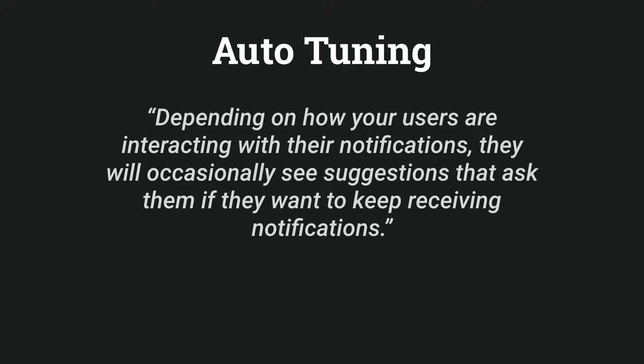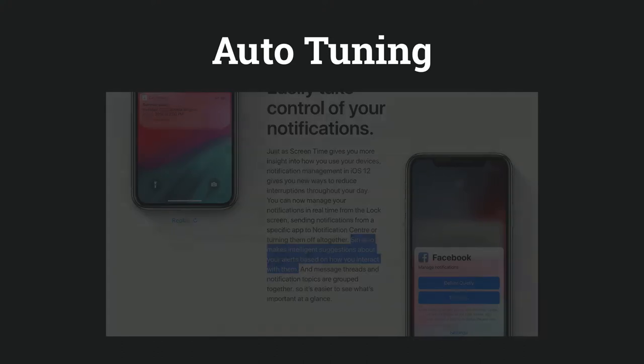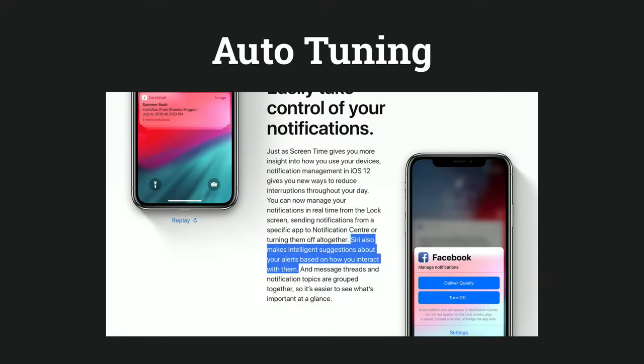The app I work on doesn't abuse the notification system — we only send a single notification each day. But this change still makes me uncomfortable because notifications have become a central part of maintaining user engagement over the long term, and this feature could fairly easily have a direct impact on that. What's worse is that that 10-second clip is all the airtime this feature received at WWDC. It's only mentioned in passing on the iOS 12 consumer-facing page and never on the developer portal — just: 'Siri also makes intelligent suggestions about your alerts based on how you interact with them.' Other than that sentence, there is no other public information about this feature.